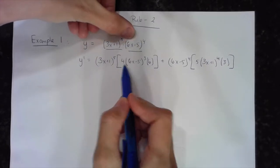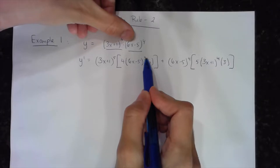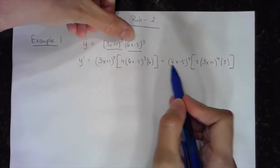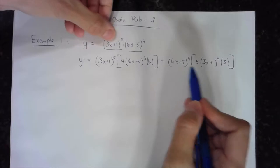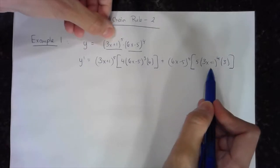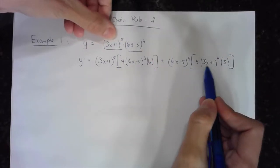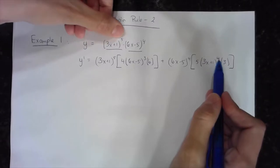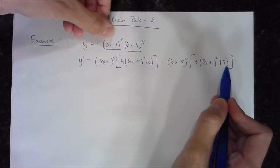Plus the second times the derivative of the first, which is also a chain rule — bring the 5 to the front, keep the base (3x + 1), subtract 1 from the exponent so this becomes a 4, multiplied by the derivative of the base. Then the first times the derivative of the second: bring the 4 down, keep the base to the third, times the derivative of the inside.